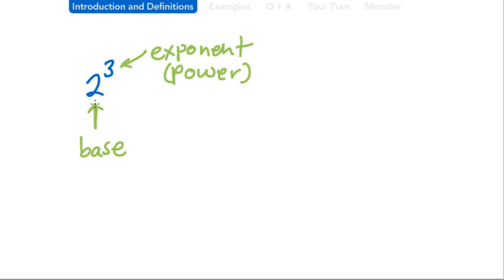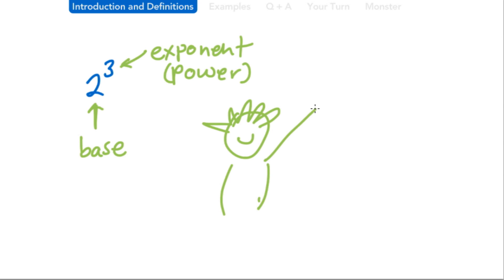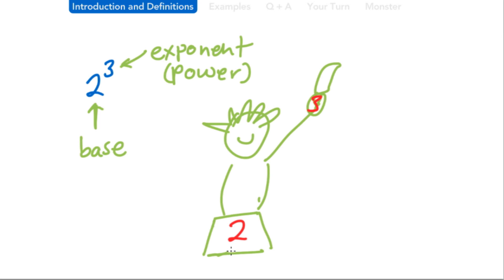Just remember that 2 is your base and 3 is your power. Almost in the same way that if you are dealing with the Statue of Liberty, you're going to have a big base on the bottom and the exponent is going to be the torch. So 2 would be your base and the 3 would be the exponent. The number floating is never the base — the big number at the bottom underneath the exponent is the base. This is very important to remember.